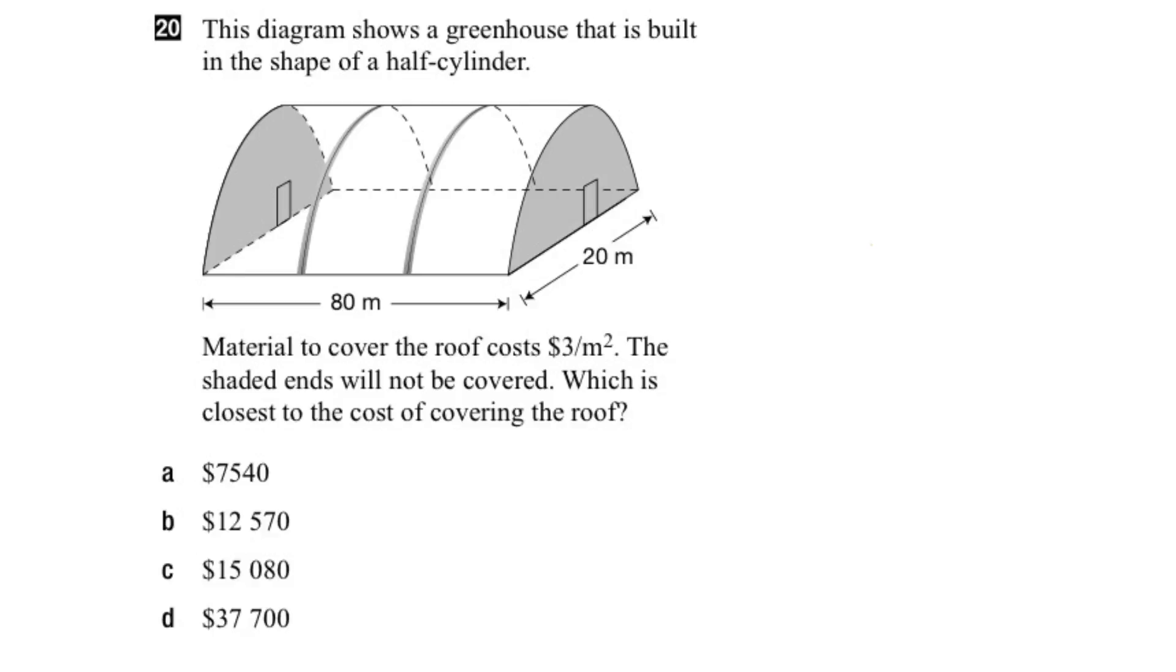So let's start by looking at the surface area of half a cylinder, which starts with, at this end, half a circle. And then at the other end, another half circle. And in the middle would be this shape here.